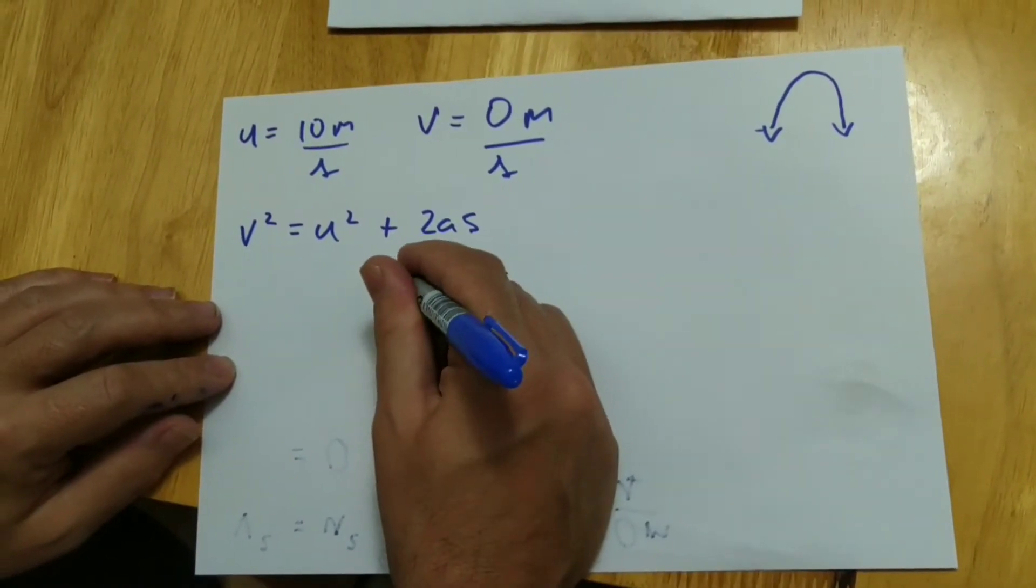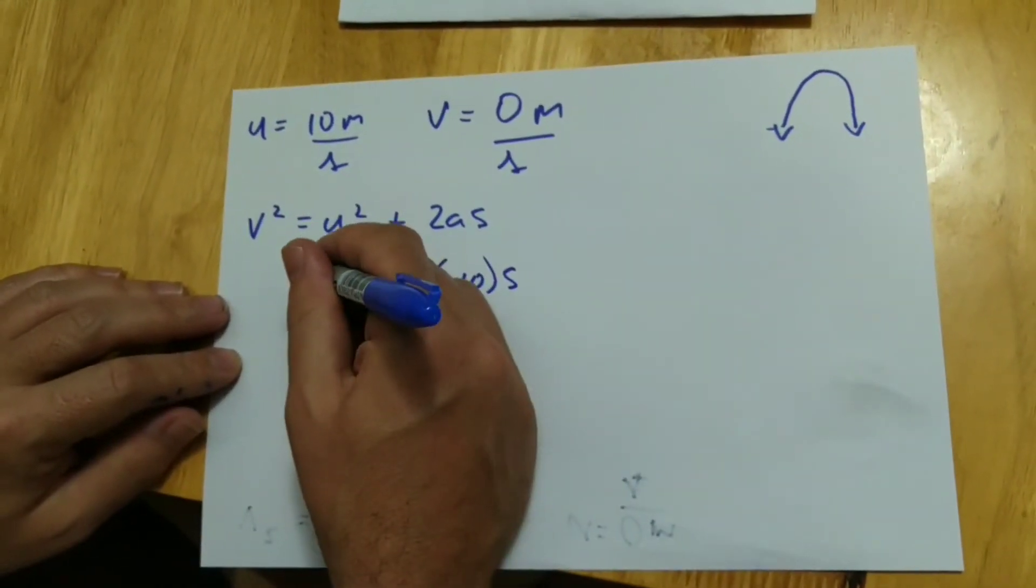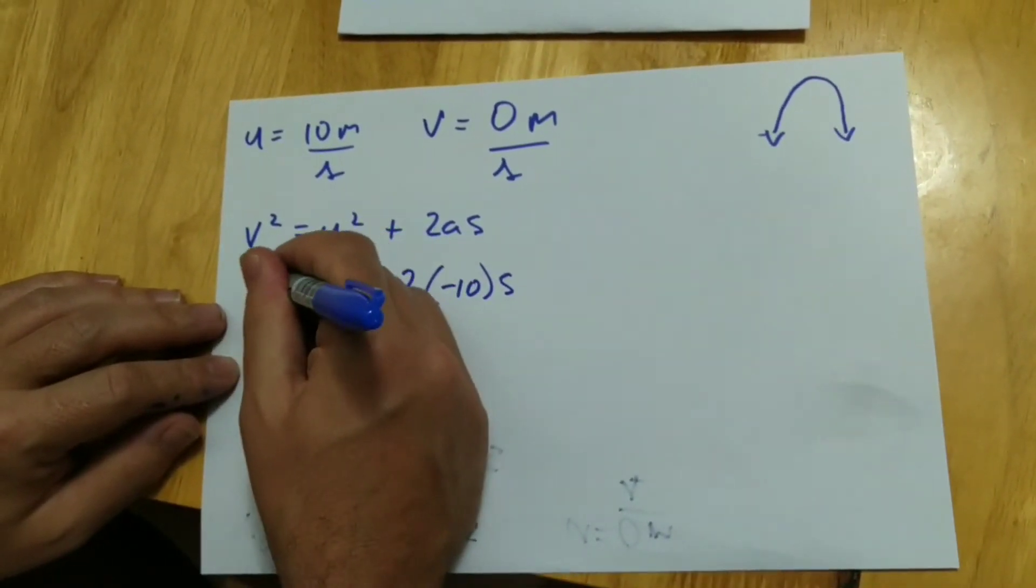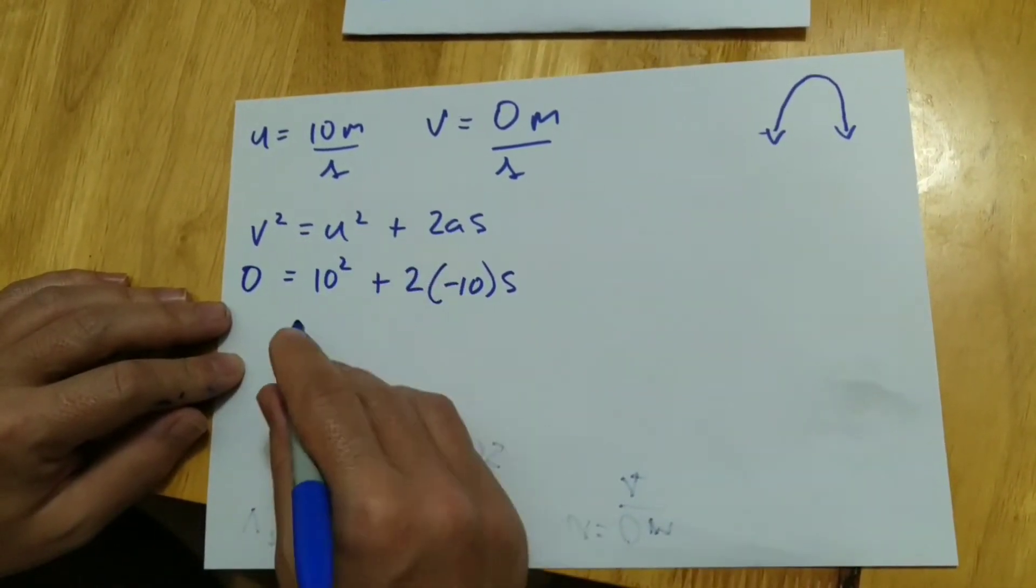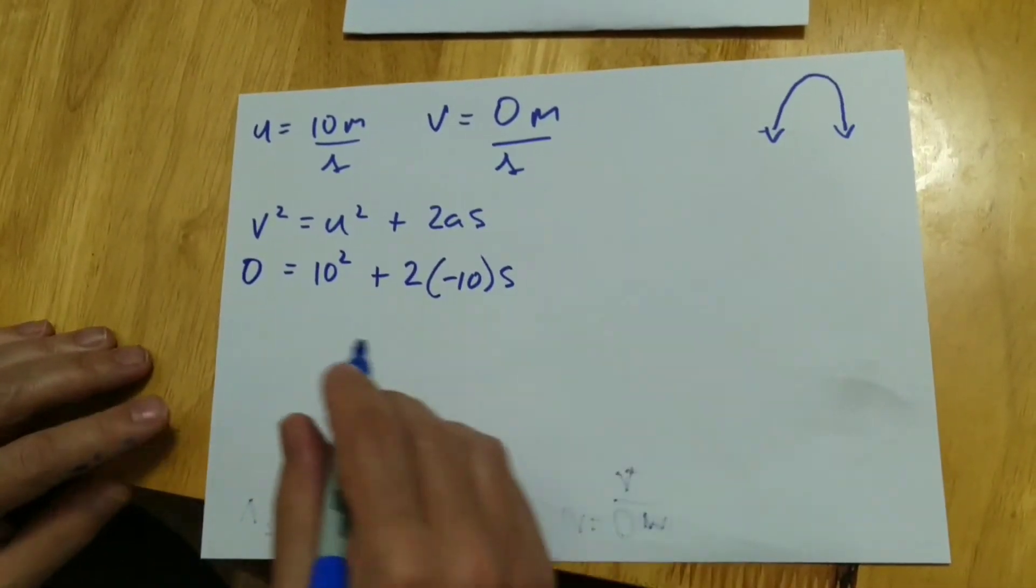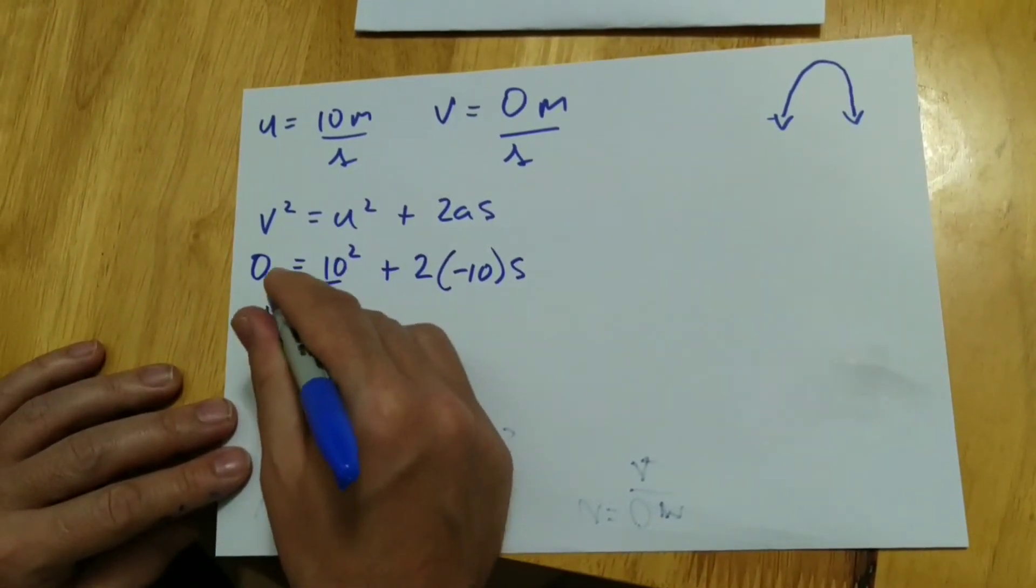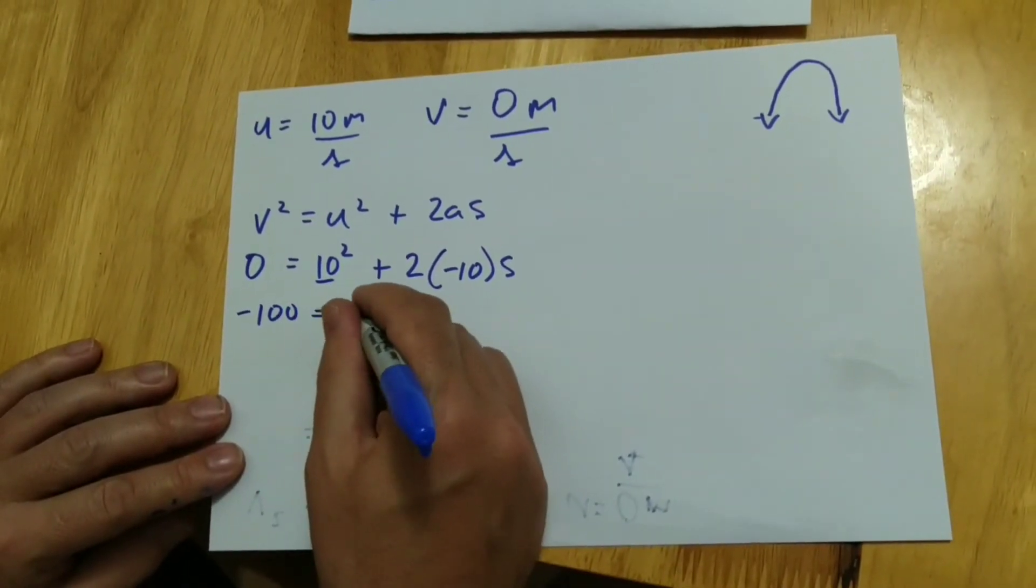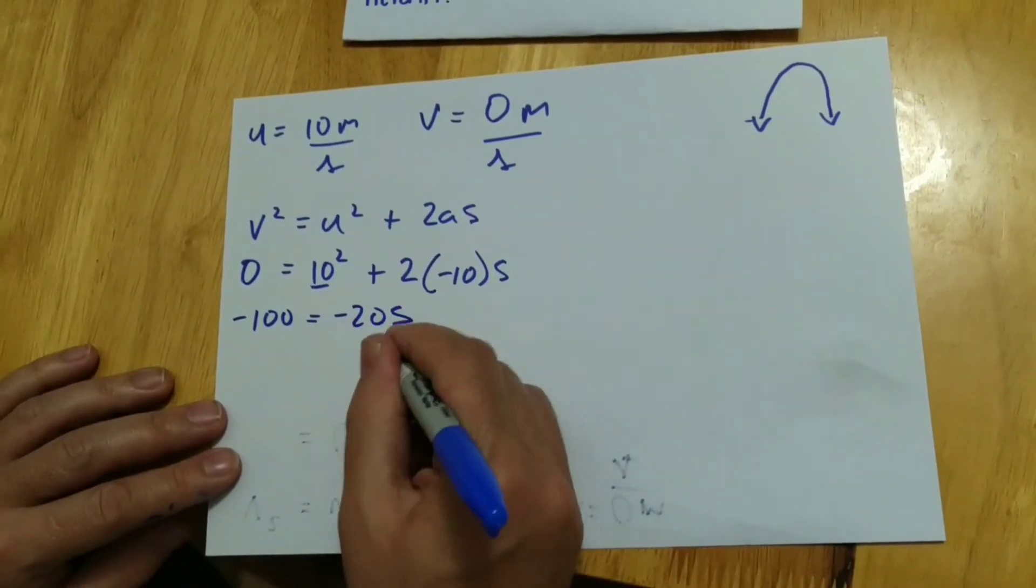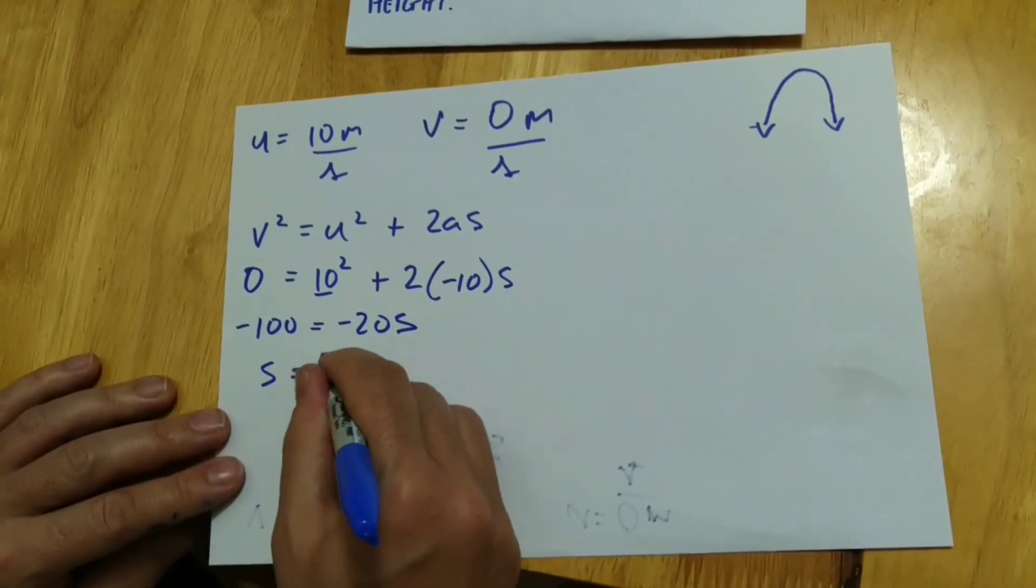I'm going to stick with v² = u² + 2as. 10 squared is equal to 100, and our velocity is zero. And we're going to put the negative 100 here. I just move that over to the other side, is equal to negative 20s. And that means that s is going to be equal to 5 meters.